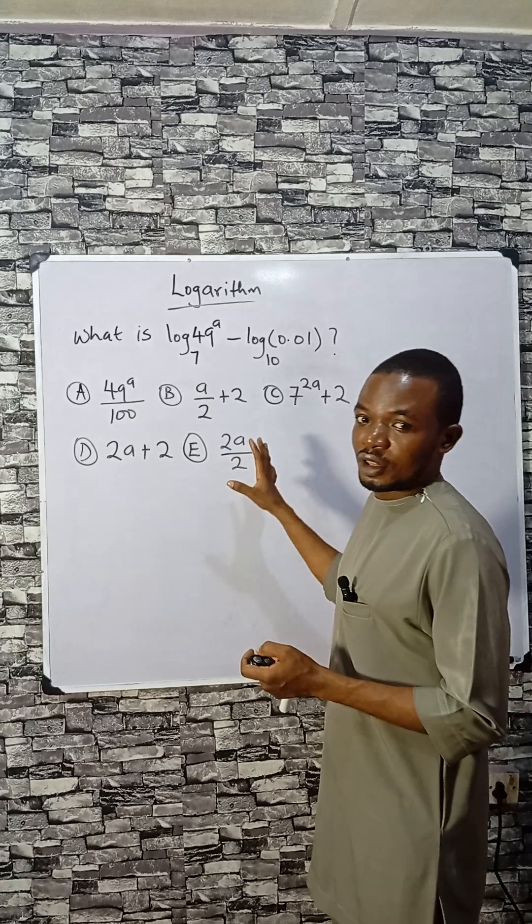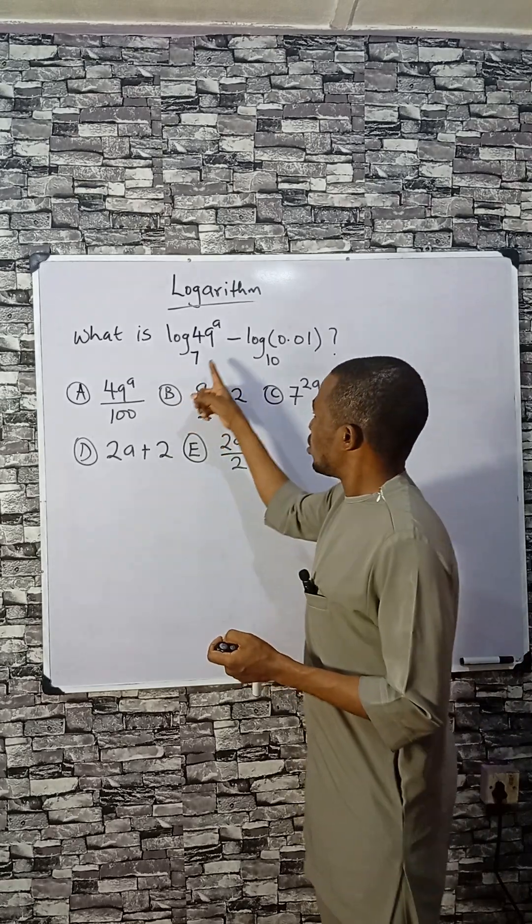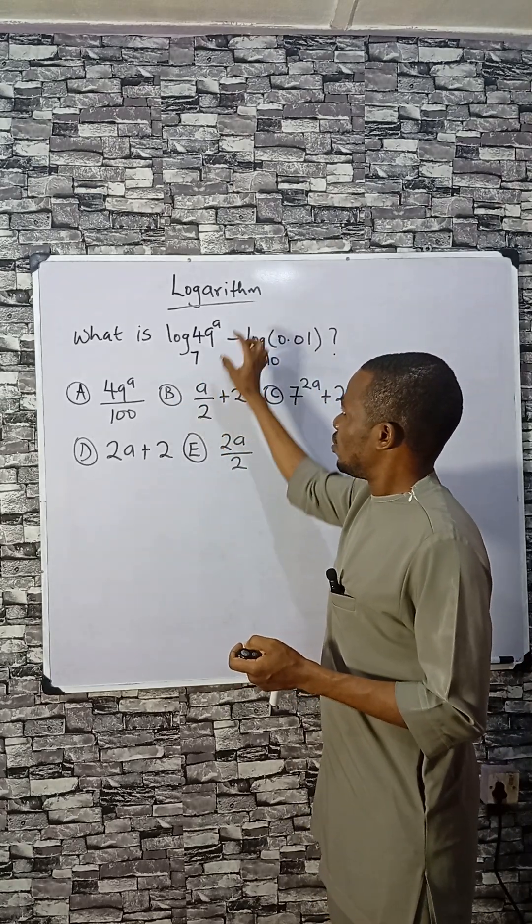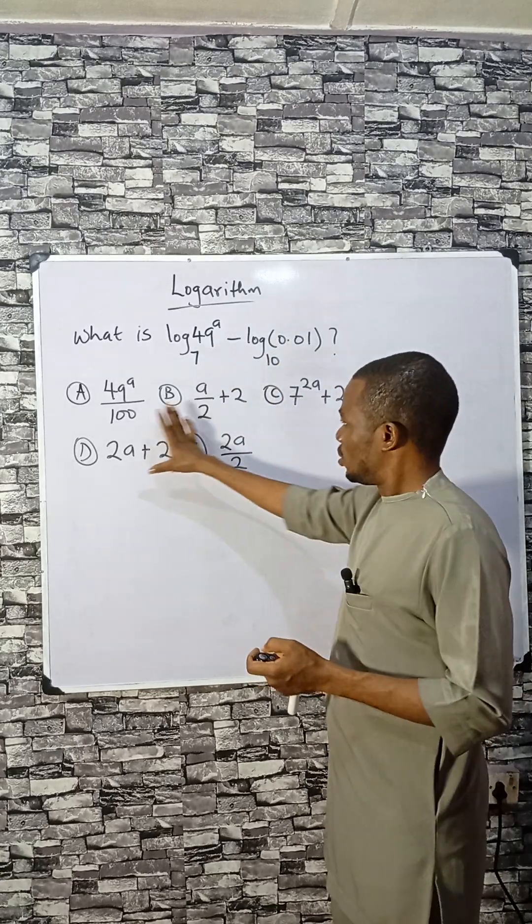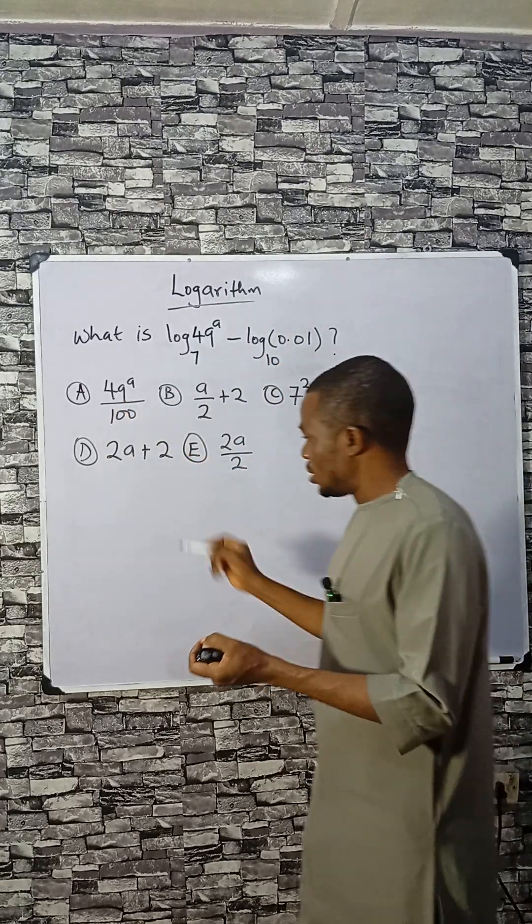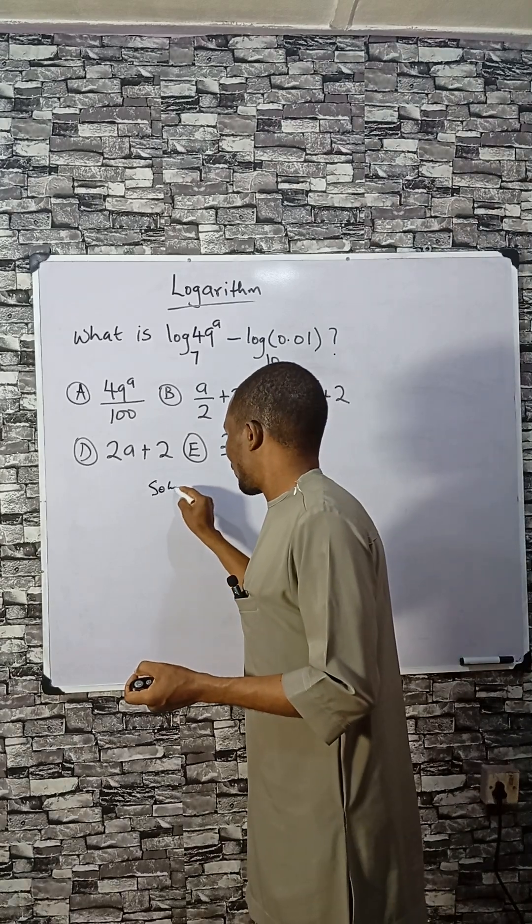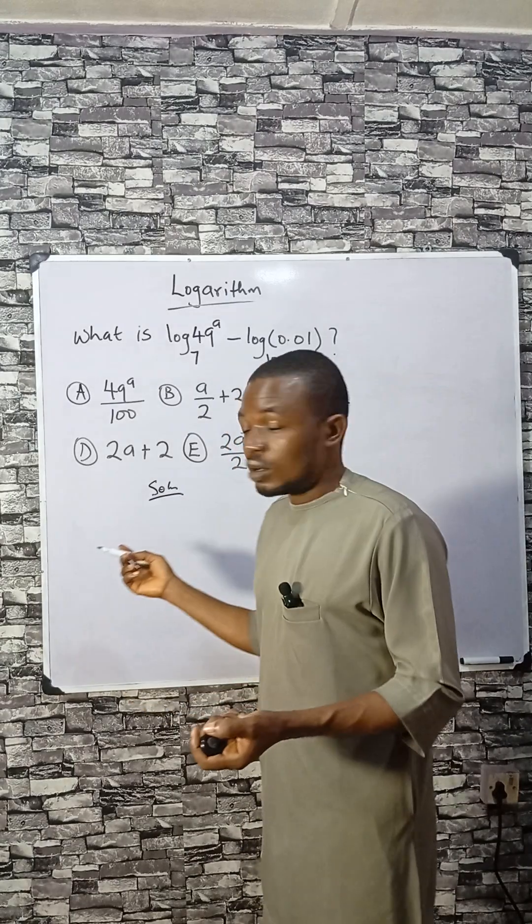Let's solve this beautiful logarithm on the board. What is log₇(49^a) minus log₁₀(0.01)? Here are the options. Let's see how we can do this together. There are many ways to solve this.